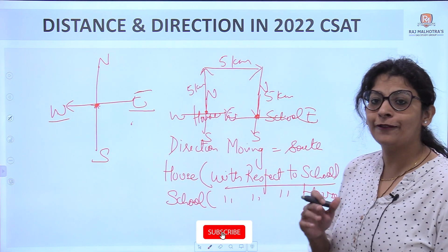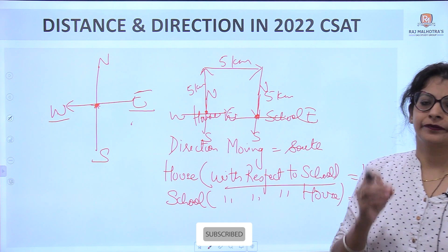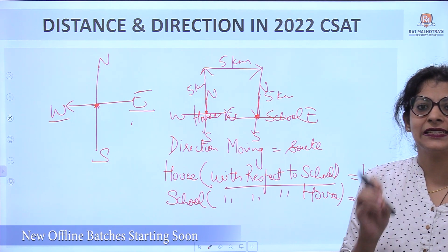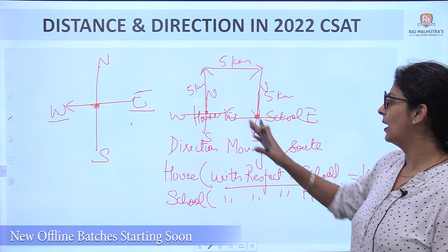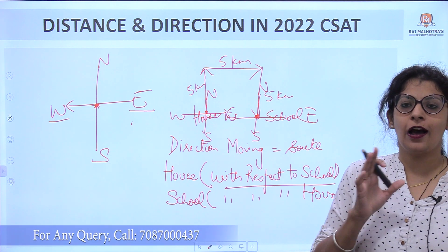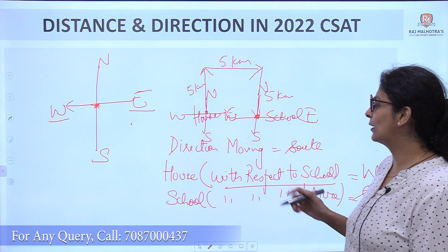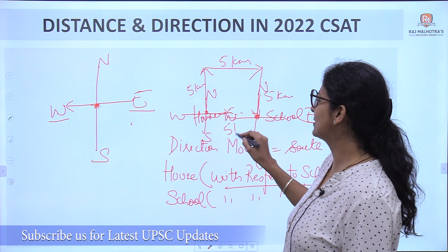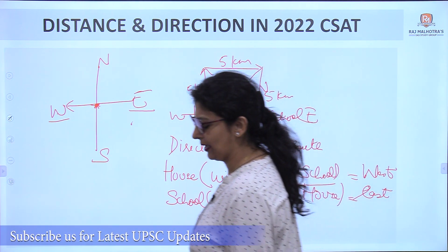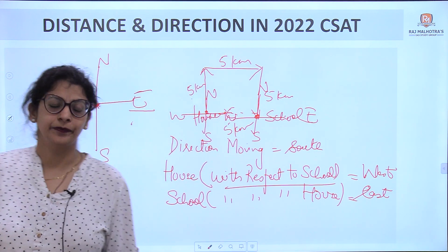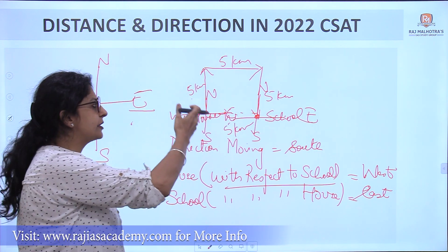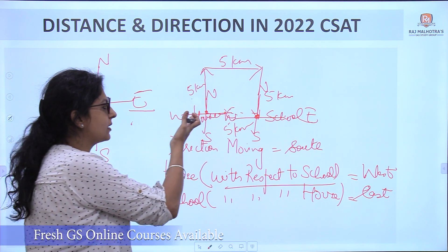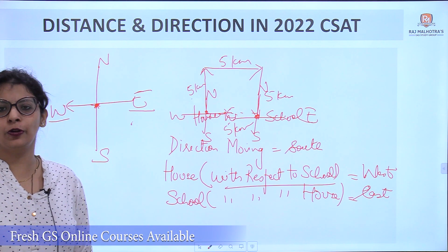The third type of question is about distance. In competitive exams, there is always a minimum distance or shortest distance question. For example: how far is his house from the school? Here the path is 5-5-5, but the minimum distance is 5 kilometers. He can go straight to the school — the direct distance between house and school is only 5 kilometers.